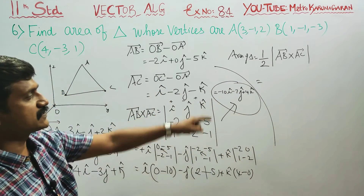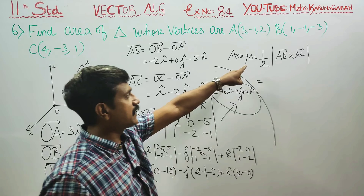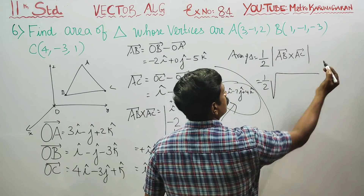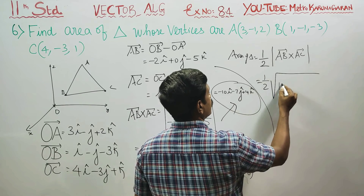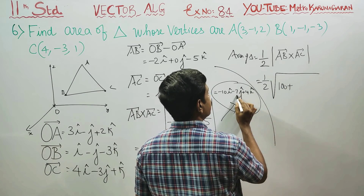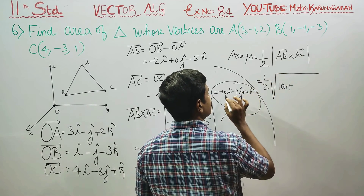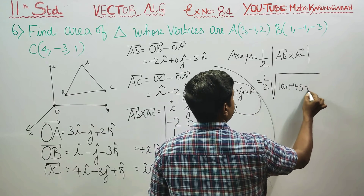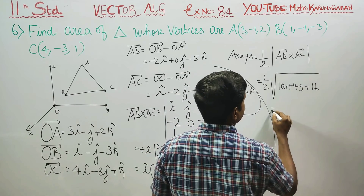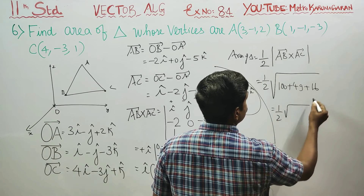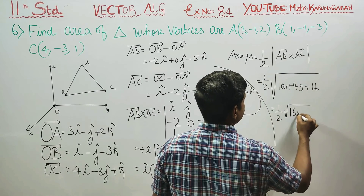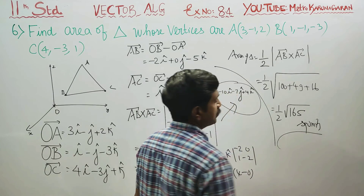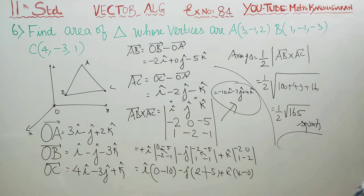They are asking us to find the area of the triangle using the magnitude. Magnitude means square root of (minus 10 squared plus minus 7 squared plus 4 squared) = square root of (100 plus 49 plus 16). Therefore, area of the triangle = one-half times root of 165 square units.